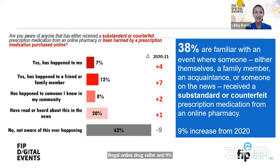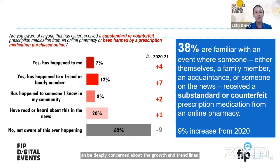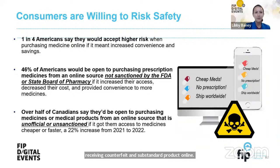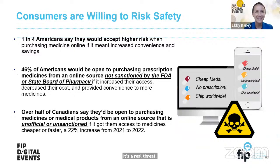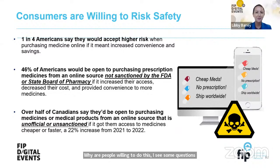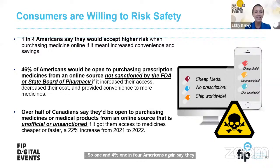A 9% increase is a leap for public health officials to be deeply concerned about the growth and trend lines of consumer behavior and knowledge of people receiving counterfeit and substandard products online — it is a real threat. Why are people willing to do this? One in four Americans say they'd accept this higher risk for cost savings and convenience — a prescription drug delivered with just a click of a button to their door.